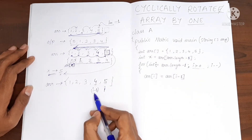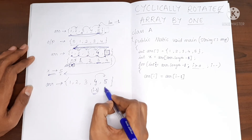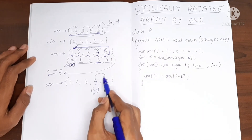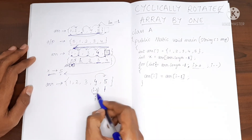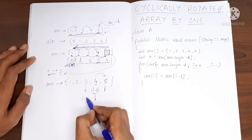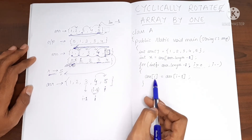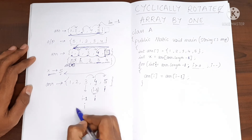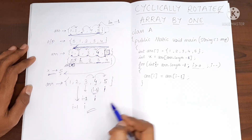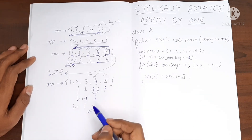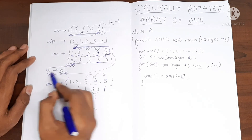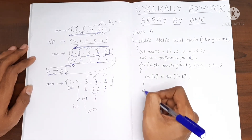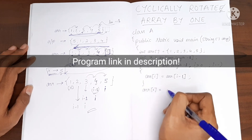So the value present at i minus 1 will be put at the ith location. At the first iteration, 4 will come here. Next i becomes i--, so i moves over here, and this 3 will move over here, and it continues. After this step, we store the value in x at index number 0: ARR of 0 equal to x. Now let's print the array.